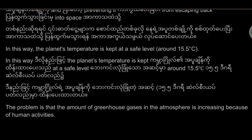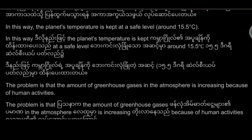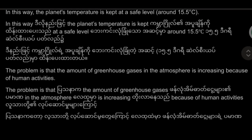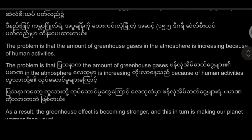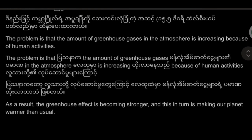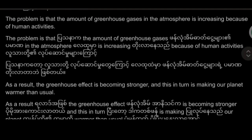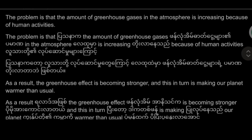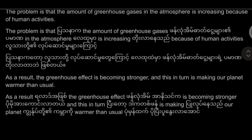In this way, the planet's temperature is kept at a safe level, around 15.5 degrees Celsius. The problem is that the amount of greenhouse gases in the atmosphere is increasing because of human activities.